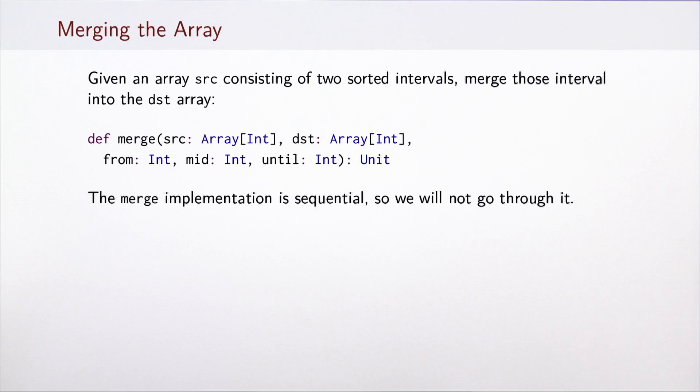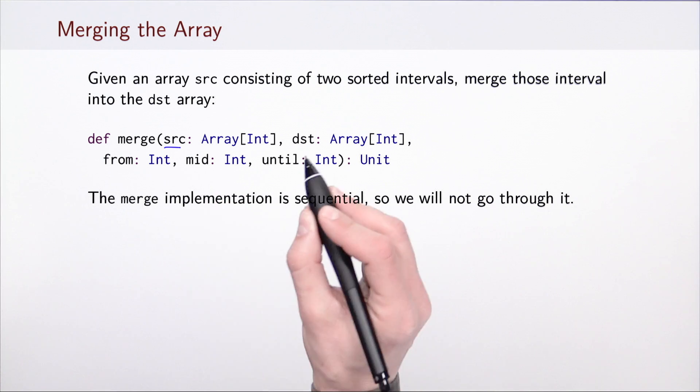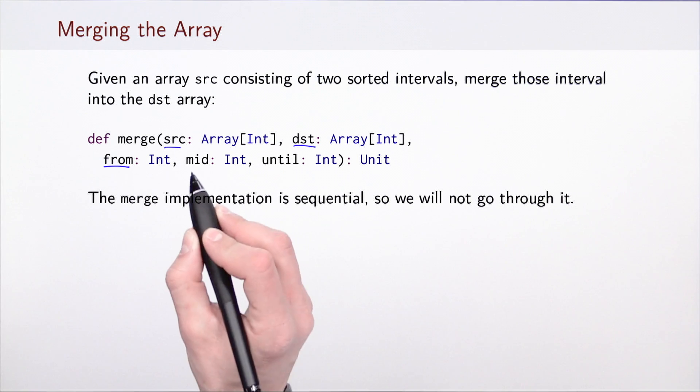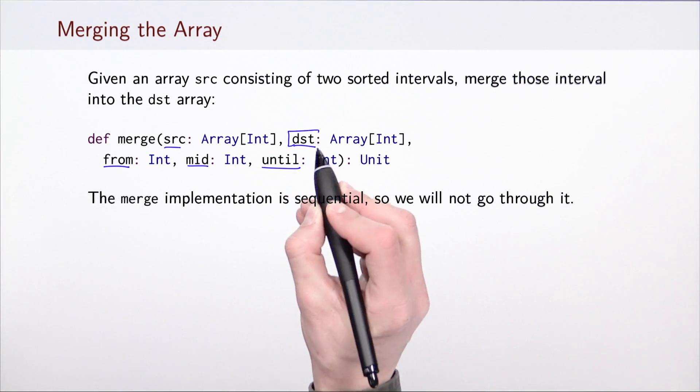Merging of the array can be done sequentially. This is a function that takes one array which is the source and then destination. It's going to take two sorted intervals in the source array, given with the beginning, the middle point, and the end point, and write the resulting merged array into the destination.